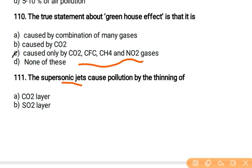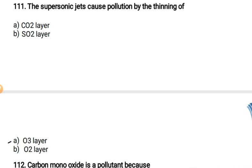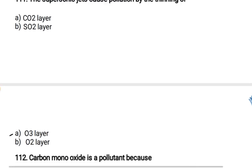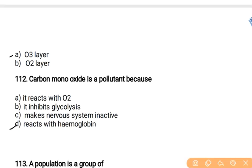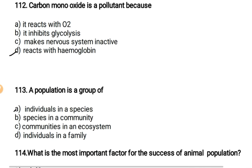The supersonic jets cause pollution by thinning of the O3 layer. Carbon monoxide is a pollutant because it reacts with hemoglobin present in our blood.